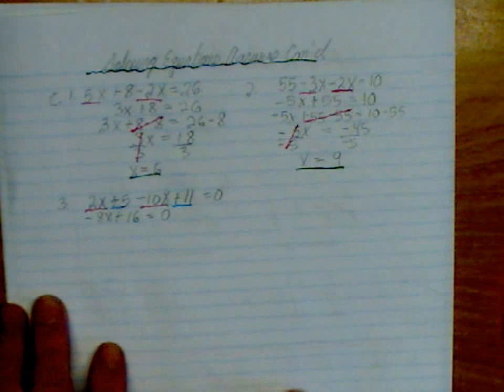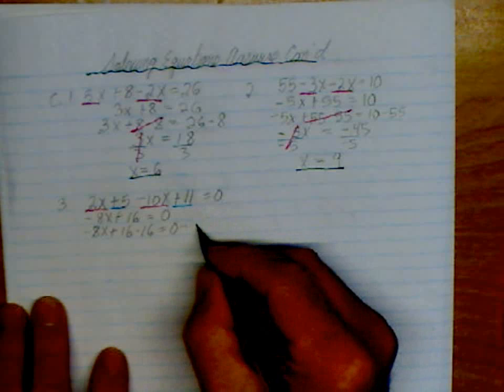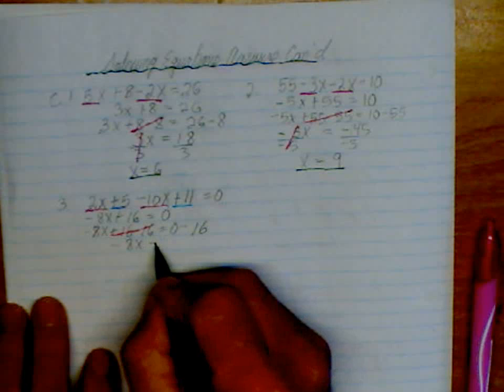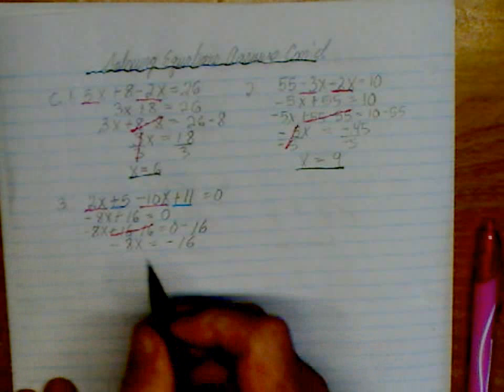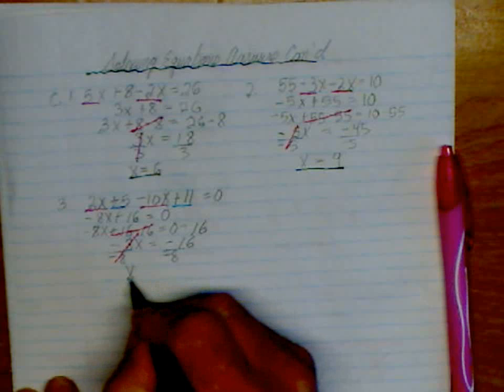Don't get concerned about that 0 at all, girls. We're going to have a number for it right away, because we need to subtract 16 from both sides. So we're just going to have 0 minus 16. So this is going to give us a negative 8x is equal to negative 16. And we need to divide both sides by negative 8. So x is equal to 2. That's our answer.